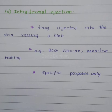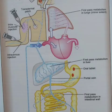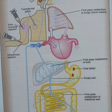A diagram is shown that overall defines the routes for drug administration, illustrating intramuscular injection, intravenous injection, transdermal patch, first-pass metabolism in the lungs, liver, and intestinal wall, and how an oral tablet enters the stomach.